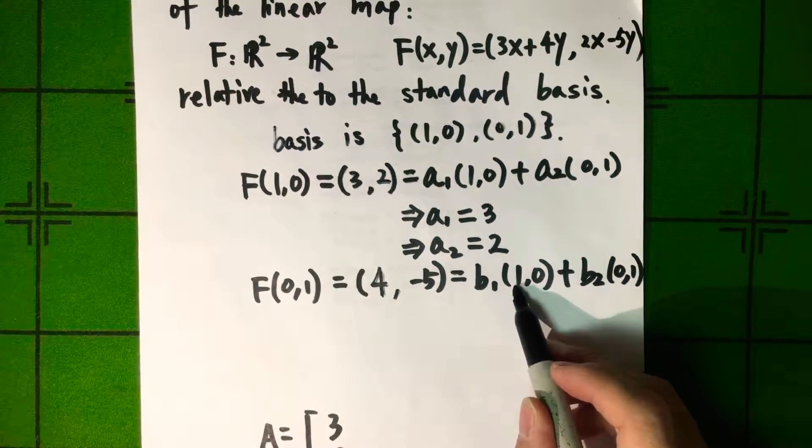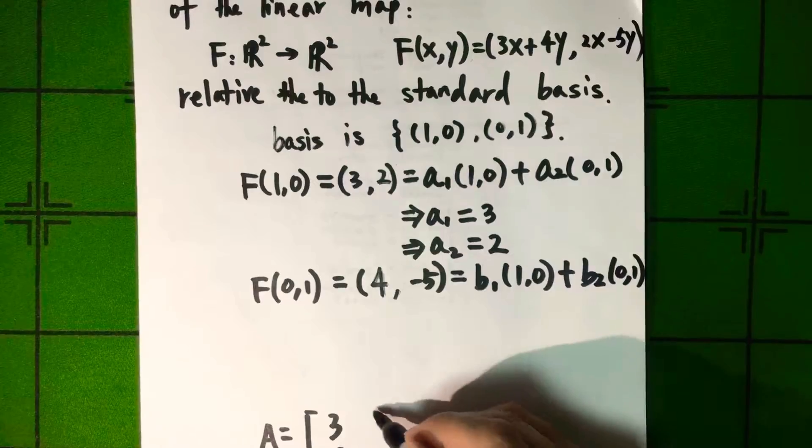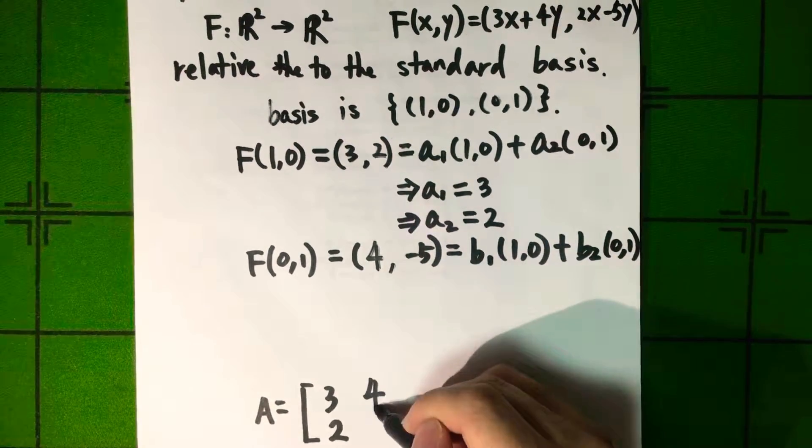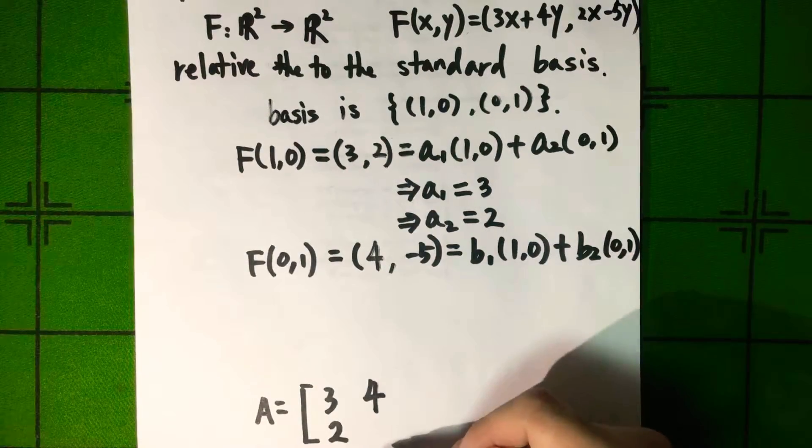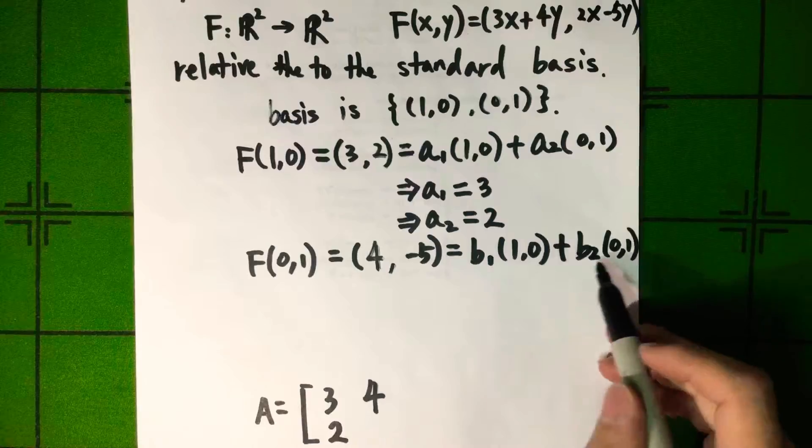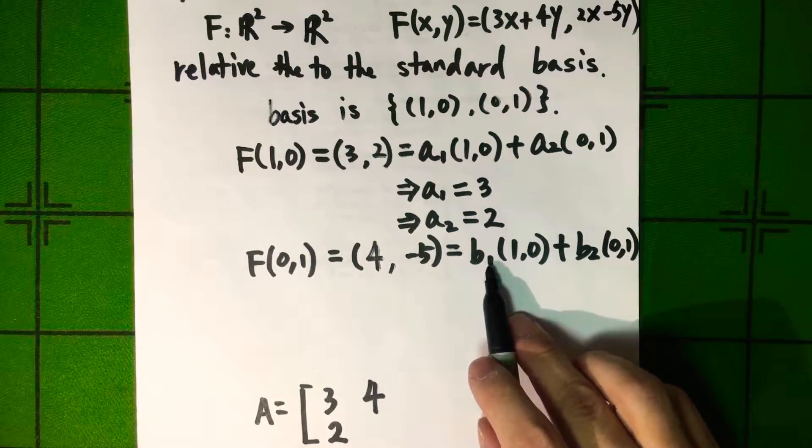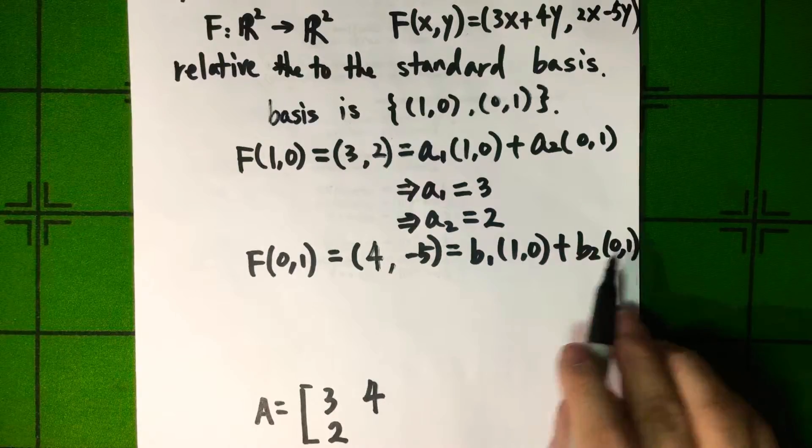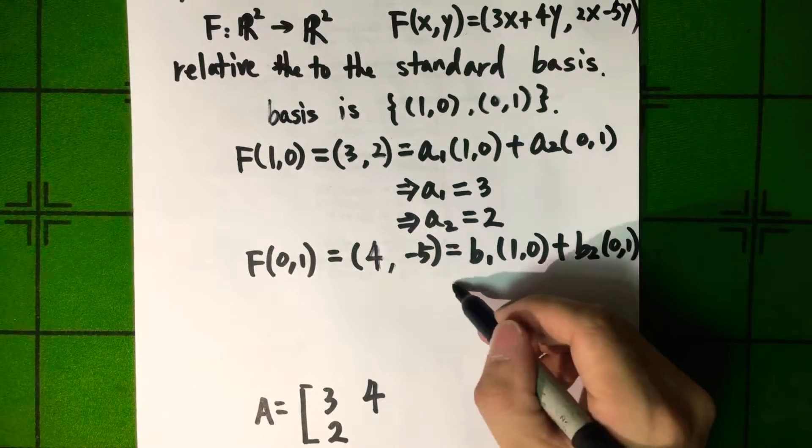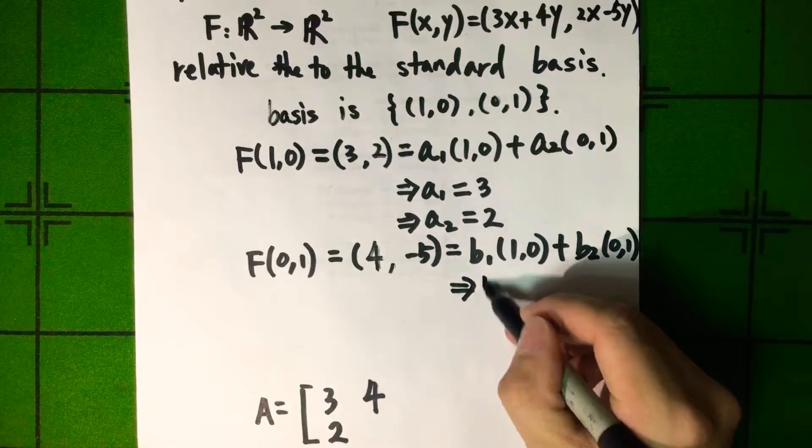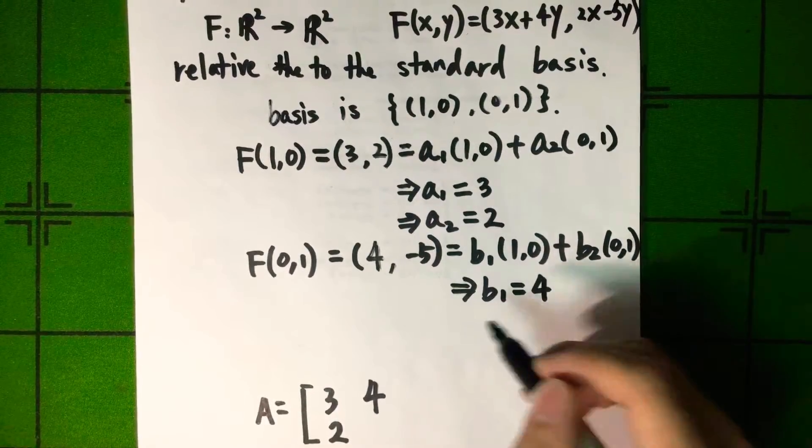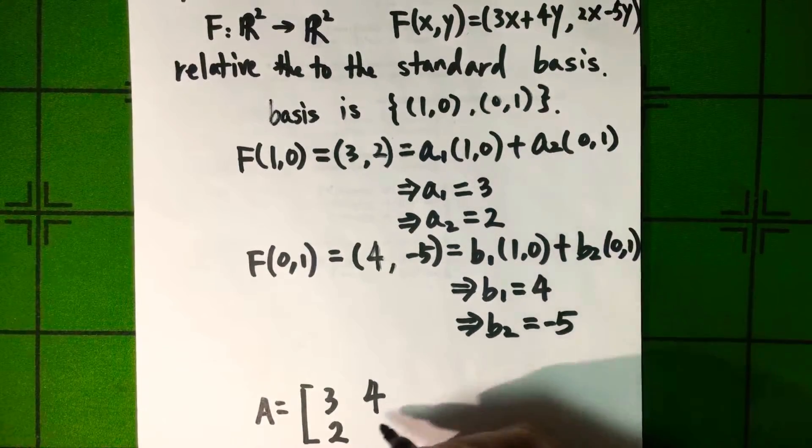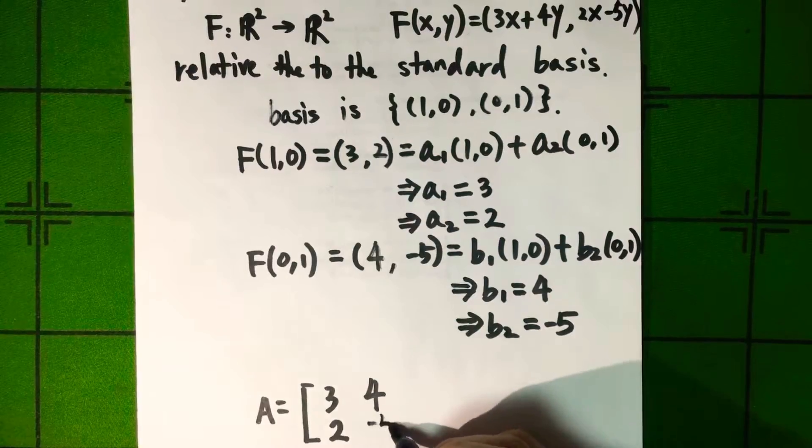And B1 is going to be equal to 4. We write that vertically in the second column of matrix A. And over here, B1 times 0 is 0 plus B2 times 1 is B2. And B2 has to be equal to minus 5. So we have B1 equal to 4 and B2 equal to minus 5. So it's 4 and minus 5.